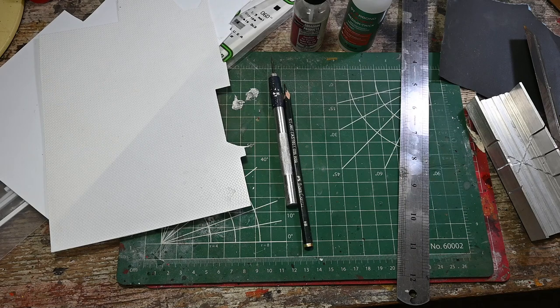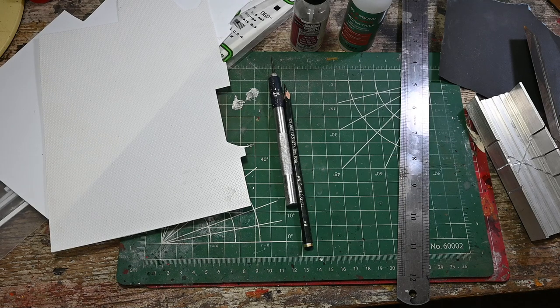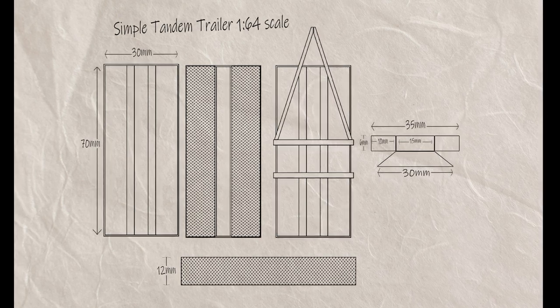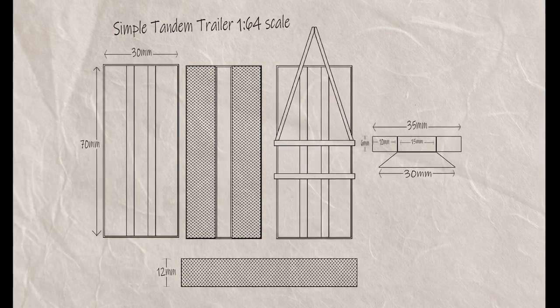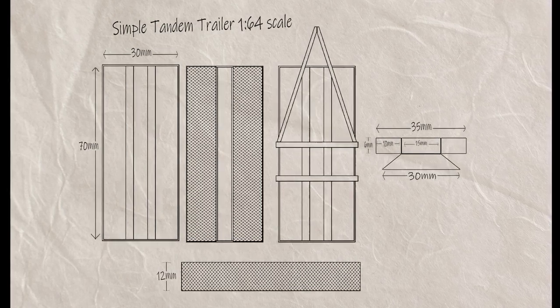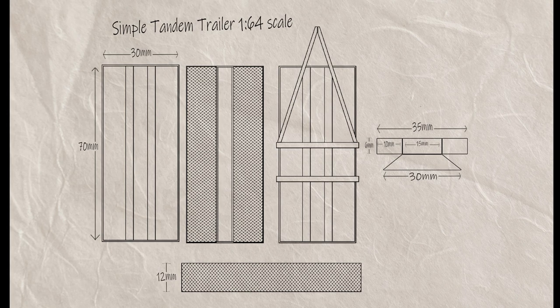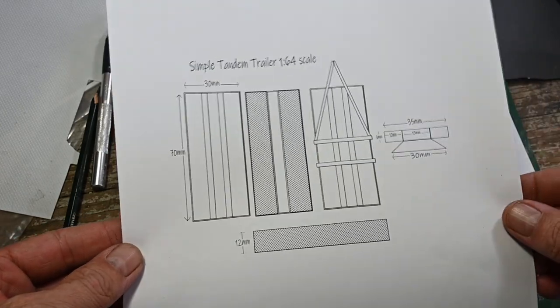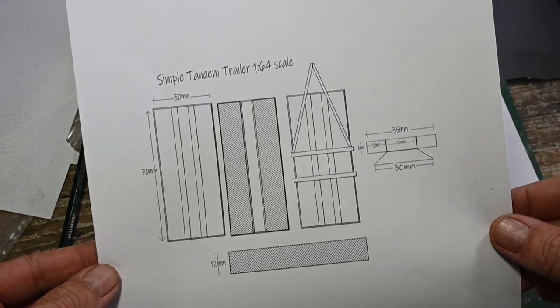I've drawn myself out some basic plans for my tandem trailer. My trailer this time is going to be the same size as the other one I made. It's 70 millimeters long and 30 millimeters wide, but check the car you're going to put it on because you might want to make the bed 35 millimeters wide. This is for a relatively small car, so there I've printed out my plan on some paper just in case I need the measurements or anything like that.